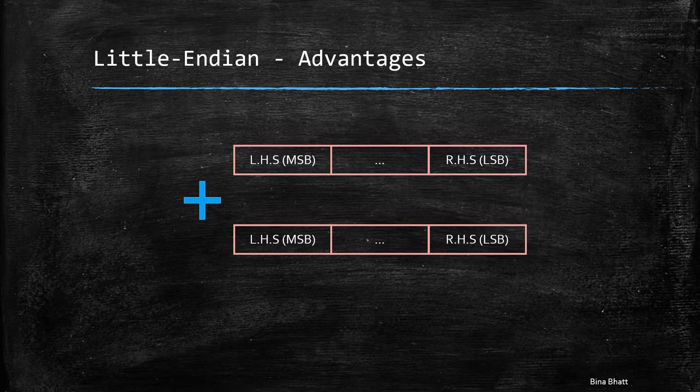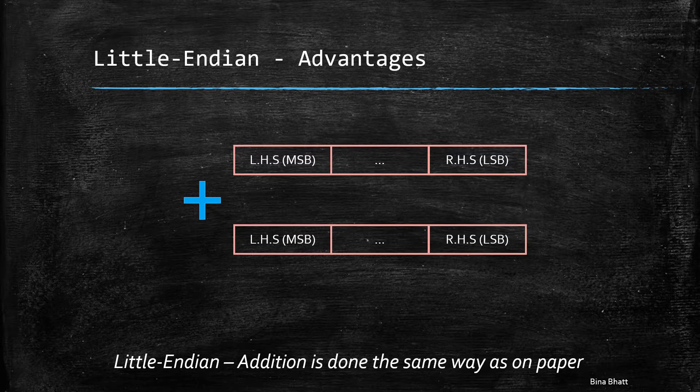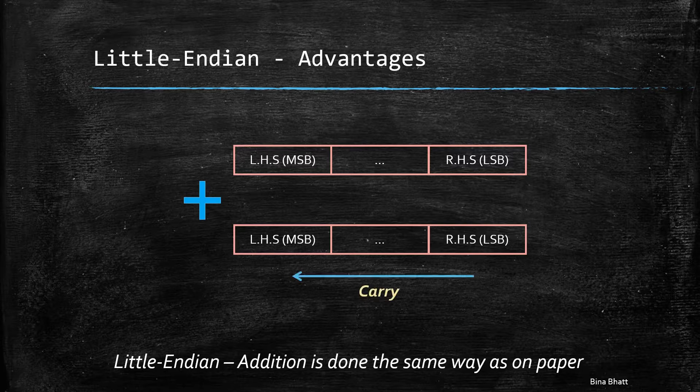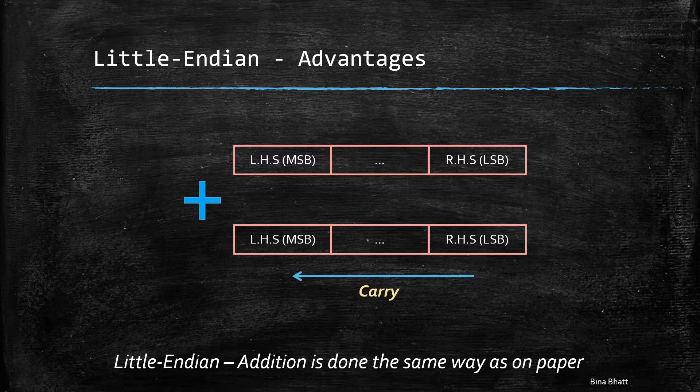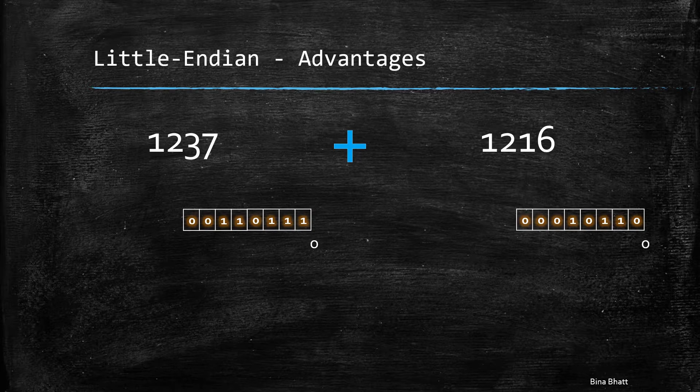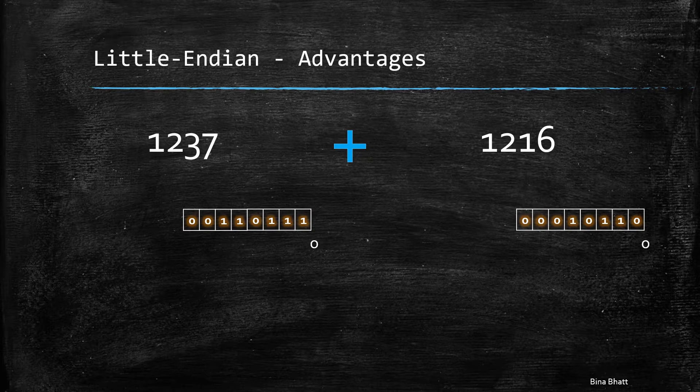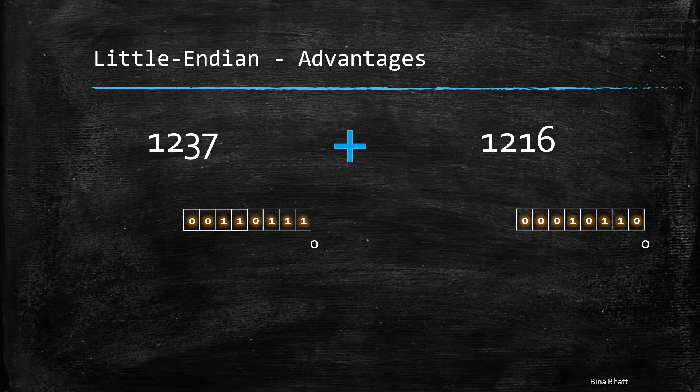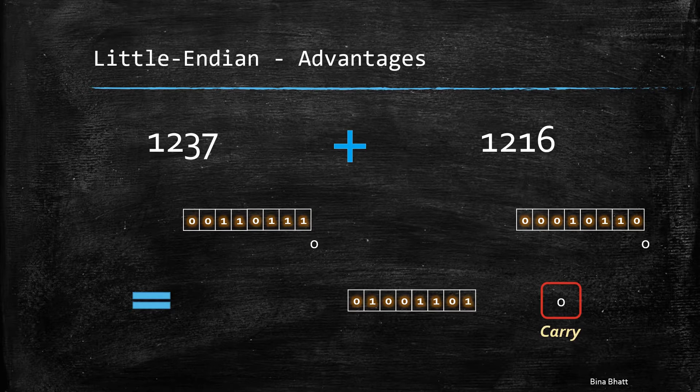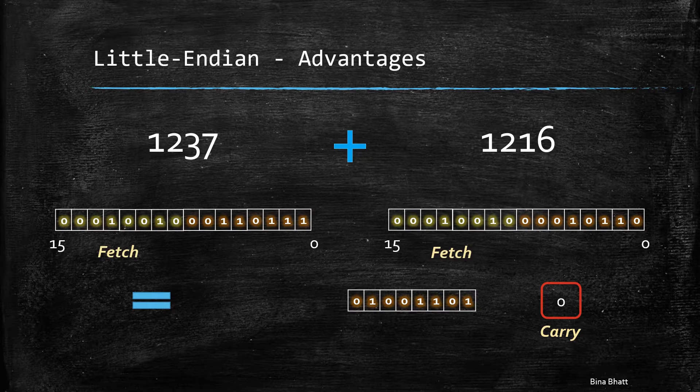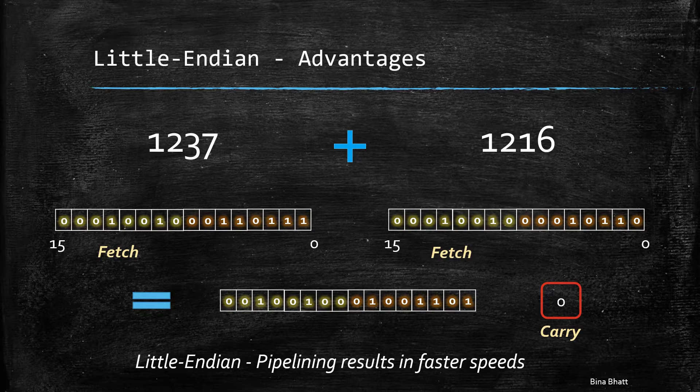For example, on paper, addition and subtraction is usually done by considering the LSB or the value at the right hand side first. This is done so that we can add the carry which is generated by the addition of right most digits to the left side digits. Now, in case of little endian system, the processor fetches the first 8 bits which is nothing but LSB and adds it to the first byte of another number. While this addition is in progress, the processor simultaneously fetches another byte which is the preceding one. So this parallelism or pipelining results in faster operation speeds.